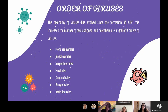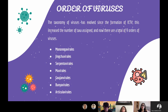Order of viruses. The taxonomy of viruses has evolved since the formation of the ICTV. This increased the number of taxa assigned and now there are a total of nine orders of viruses. These include Mononegavirales, Gentuvirales, Serpentovirales, and so on.